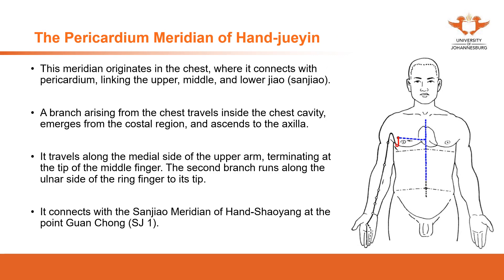The pericardial meridian originates in the chest, where it connects with the pericardium, and links with the upper, middle, and lower jiao. A branch arising from the chest travels inside the chest cavity, emerges from the costal region, and ascends to the axilla. From there it travels along the medial side of the upper arm and terminates at the tip of the middle finger.